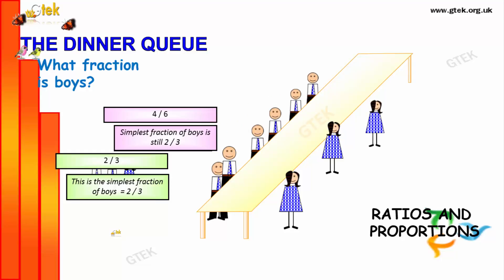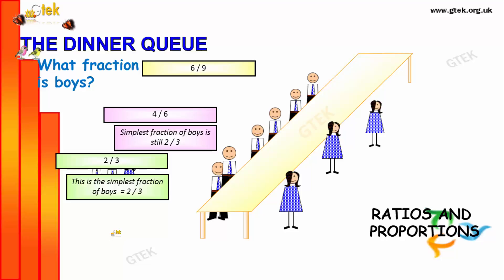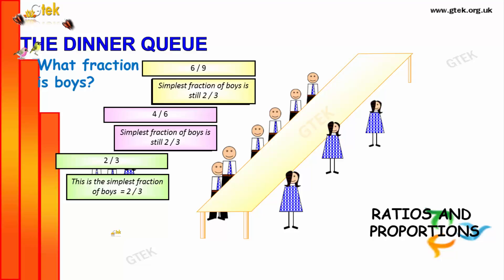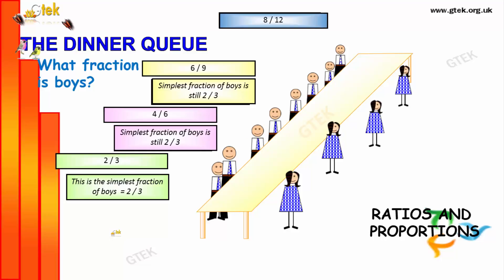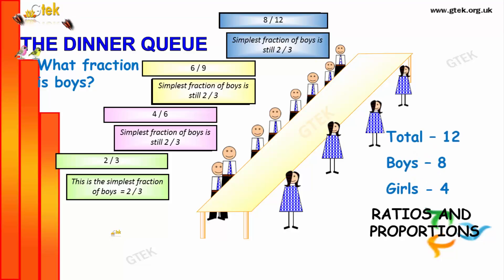Now, we got 6 boys among 9 people. 6 divided by 9. The simplest fraction of boys is 2 by 3. Now, we got another pair. So, 8 boys out of 12. The simplest fraction of boys is 2 by 3. This is how your fraction of boys is calculated.